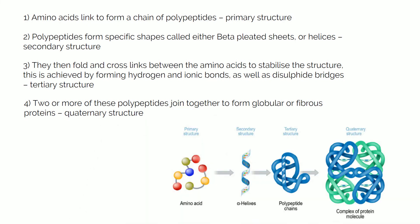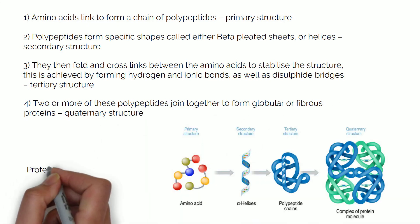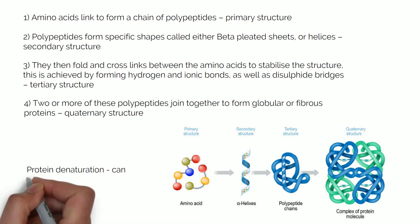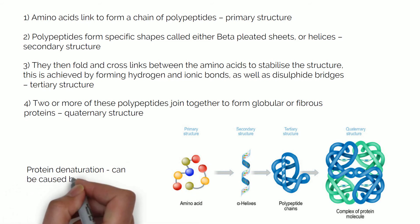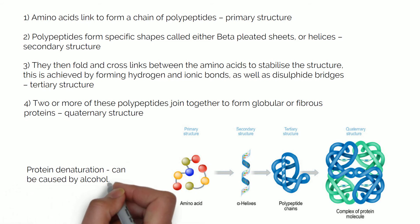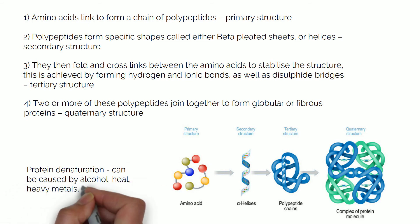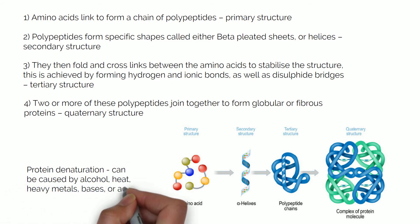This whole process can be reverted, causing the proteins to lose their shape and function — a process called protein denaturation. This can be caused by alcohol, heat, heavy metals, bases or acids.